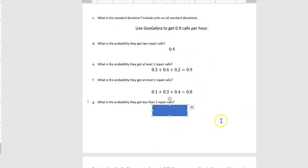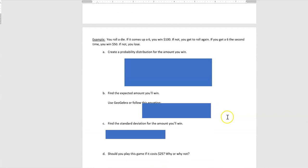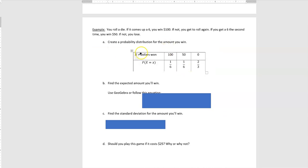All right, let's look at another example. If you roll a die and it comes up six, you win $100. If not, you get to roll again. If you get a six the second time, you win $50, and if not, you lose. Create a probability distribution for the amount you win. Well, there's three things that can happen when you play this game: you could win $100, or you could win $50, or you could win nothing. So the X that we're talking about is the amount that you could win, or the dollars won, and that's $100, $50, or zero.